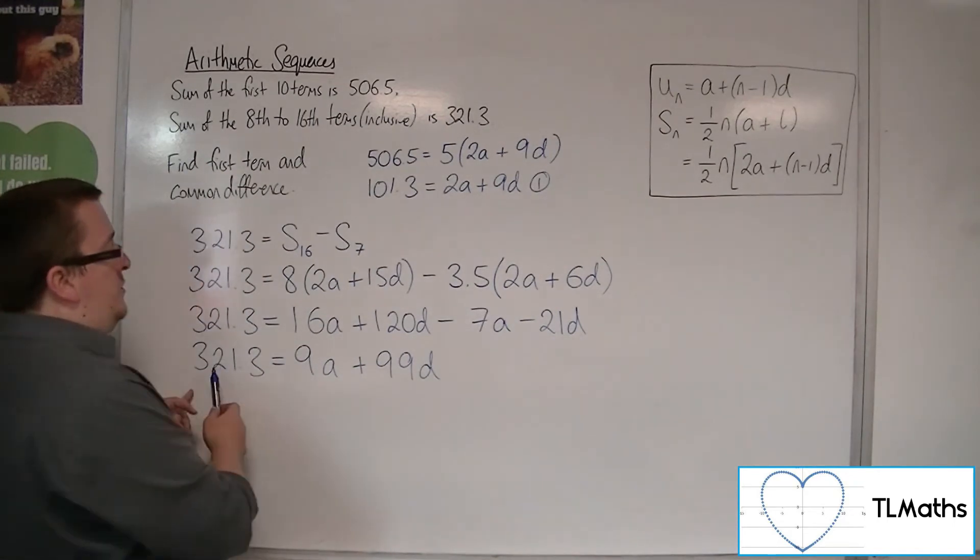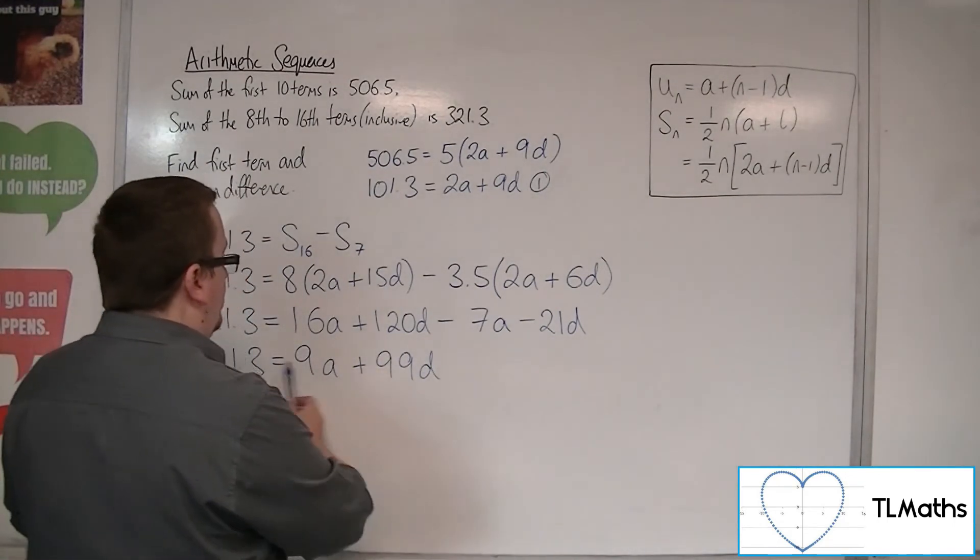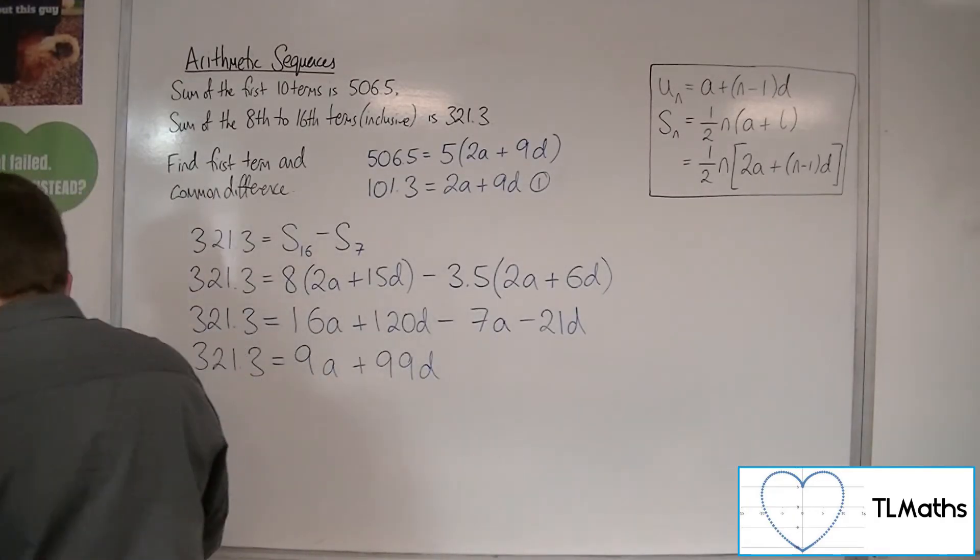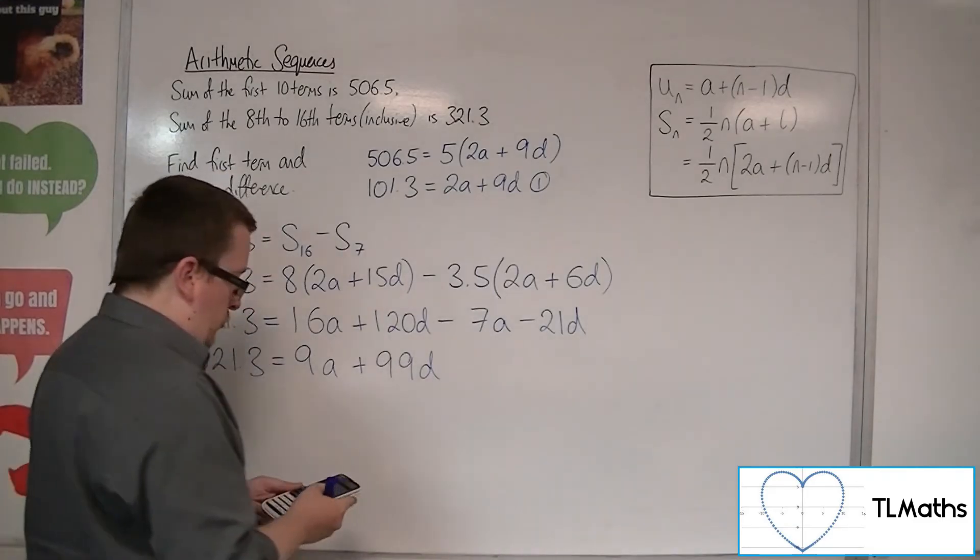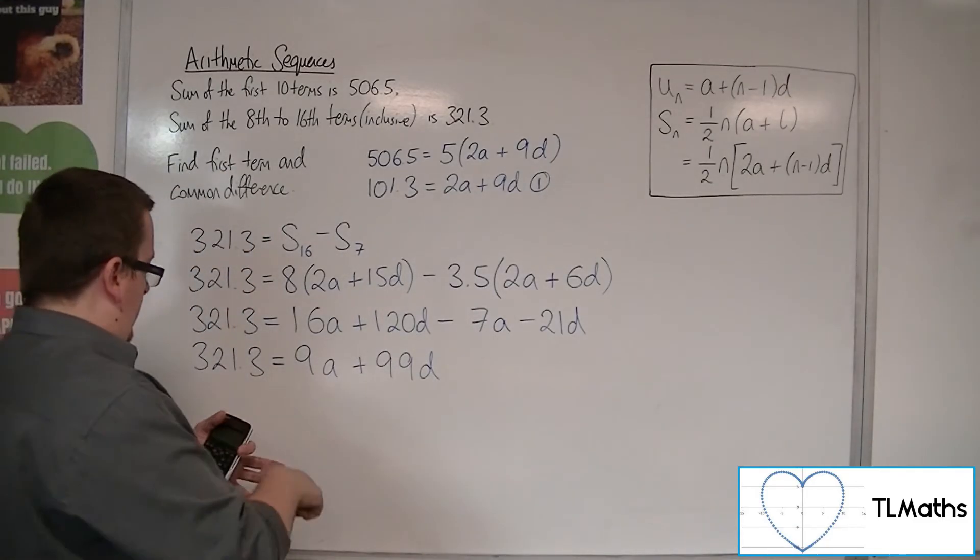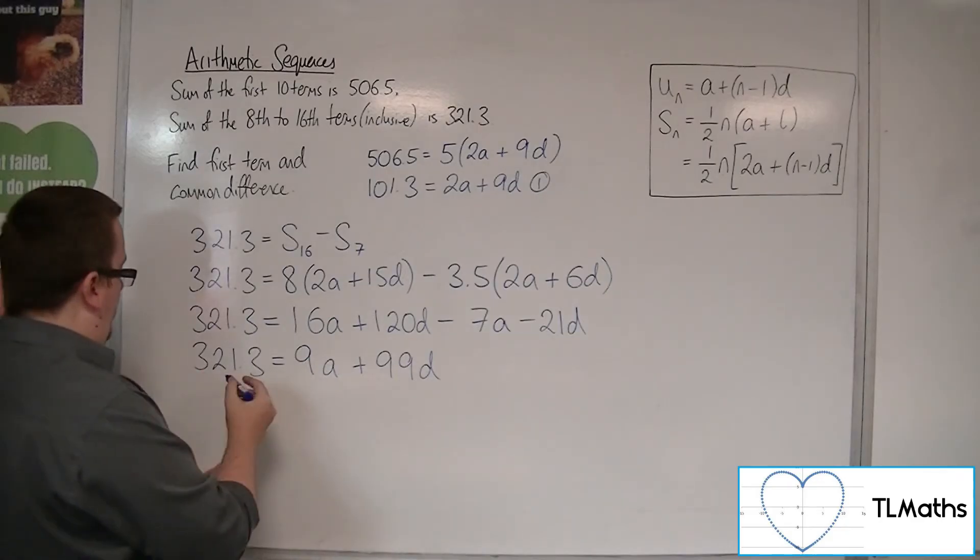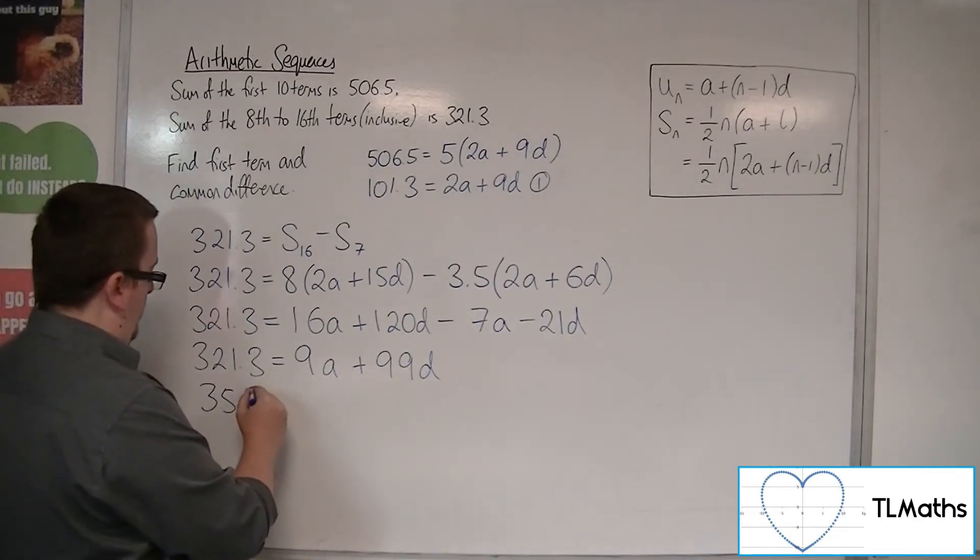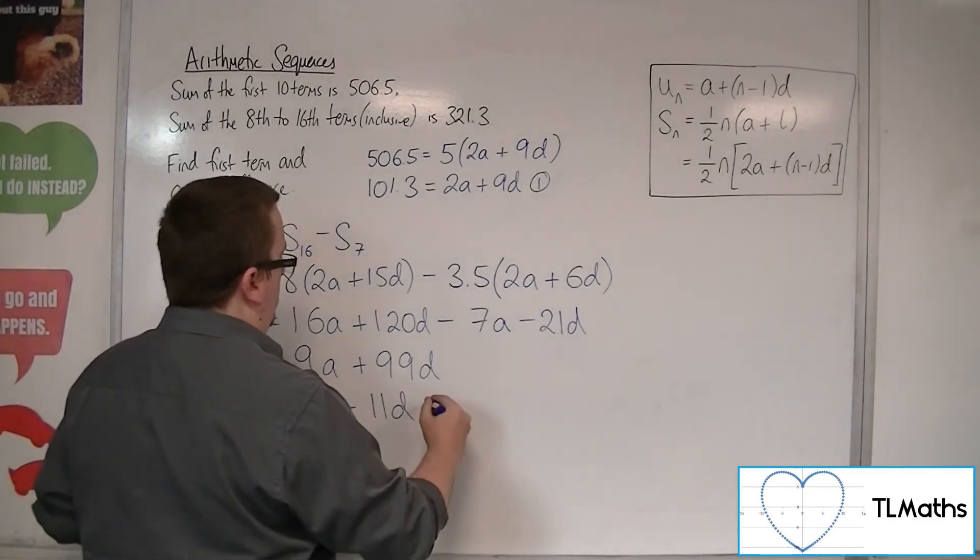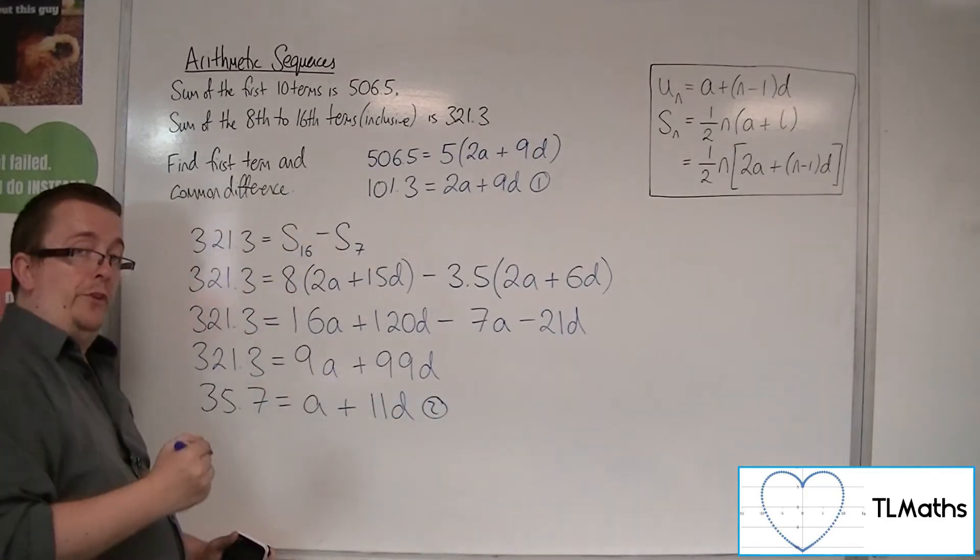Now, if I divide that one through by 9, both sides by 9, 321.3 divided by 9 is 35.7, so 35.7 is a plus 11d. So this is my equation number 2.